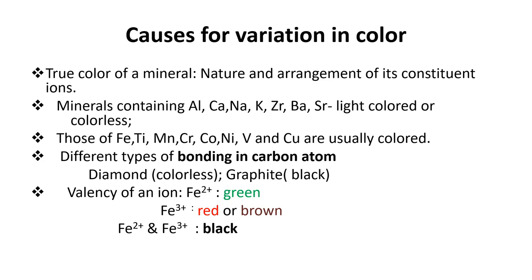The true color of a mineral depends upon the nature and arrangement of its constituent ions. Minerals containing elements like aluminum, calcium, sodium, potassium, zircon, barium, or strontium are very light colored or colorless. Minerals containing iron, titanium, manganese, chromium, cobalt, nickel, vanadium, and copper are usually colored. Color variation can also be due to different types of bonding in carbon: diamond is colorless with a covalent bond, whereas graphite is black with van der Waals bonds.